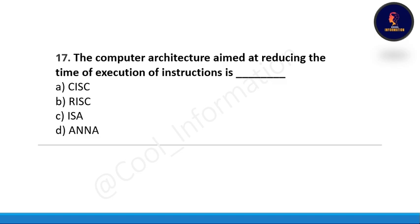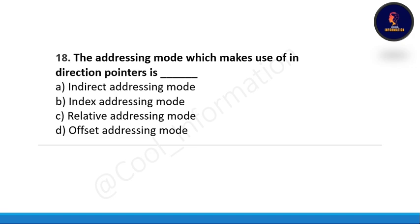Question number seventeen: the computer architecture aimed at reducing the time of execution of instructions is what? Option A: CISC. Option B: RISC. Option C: ISA. Option D: INNA. The correct option is option B, which is RISC.